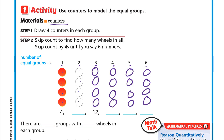Step two: skip count to find how many wheels in all. We skip count by fours until we say six numbers. So: 4 plus 4 is 8, plus 4 is 12, plus 4 is 16, plus 4 is 20, plus 4 is 24.